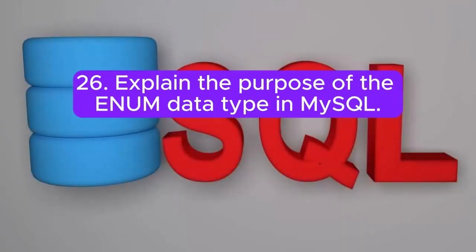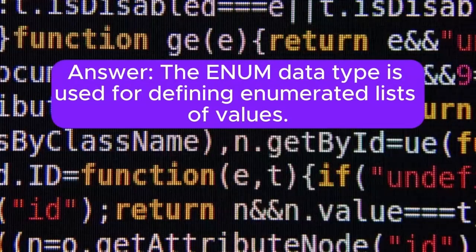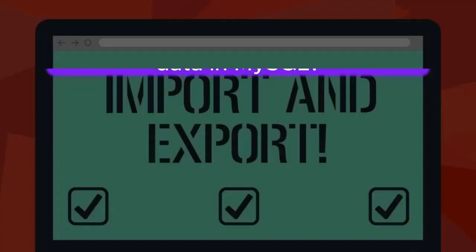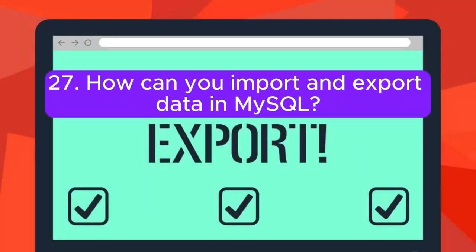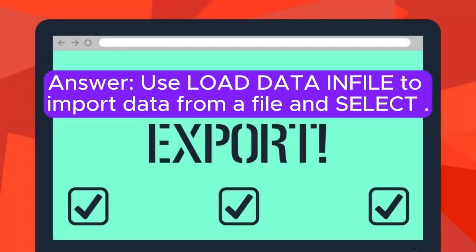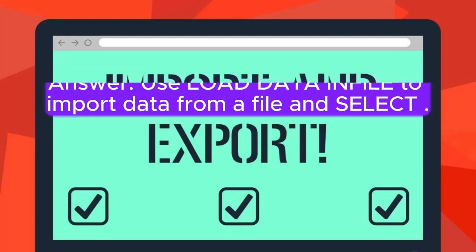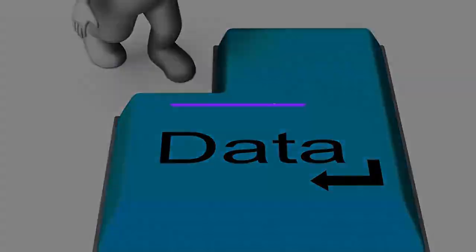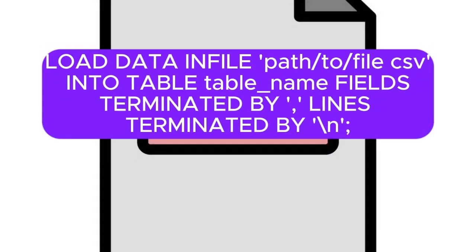Question 26: Explain the purpose of the ENUM data type in MySQL. Answer: The ENUM data type is used for defining enumerated lists of values. It restricts the column to values defined in the enumeration. Question 27: How can you import and export data in MySQL? Answer: Use LOAD DATA INFILE to import data from a file, and SELECT...INTO OUTFILE to export data to a file. For example: LOAD DATA INFILE 'path/to/file.csv' INTO TABLE table_name FIELDS TERMINATED BY ',' LINES TERMINATED BY '\n'.